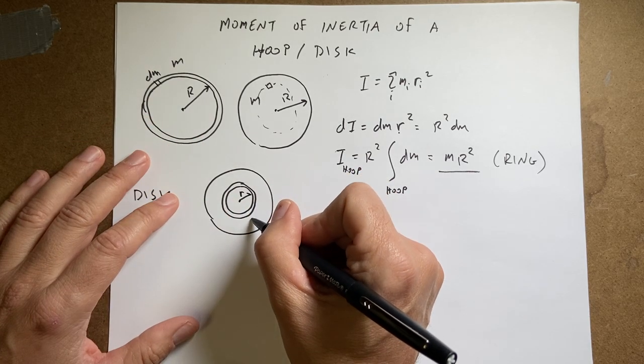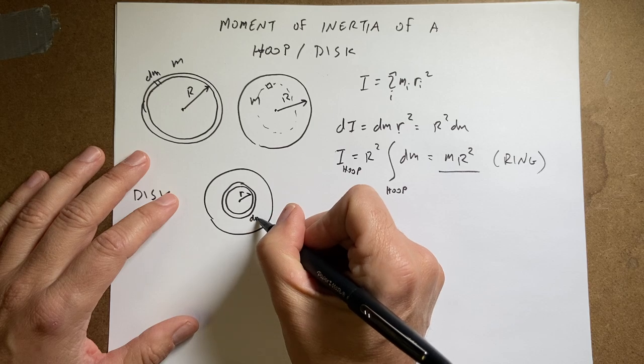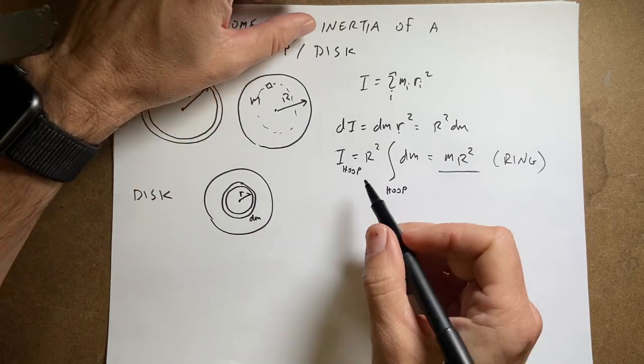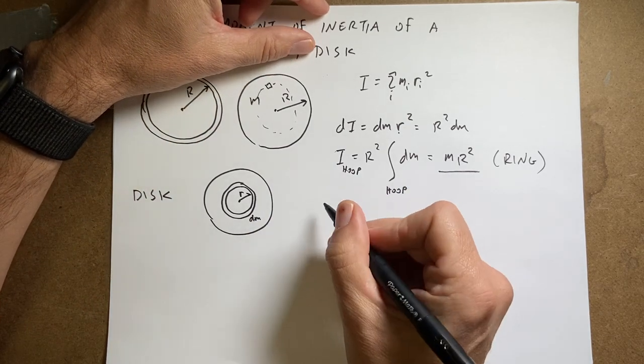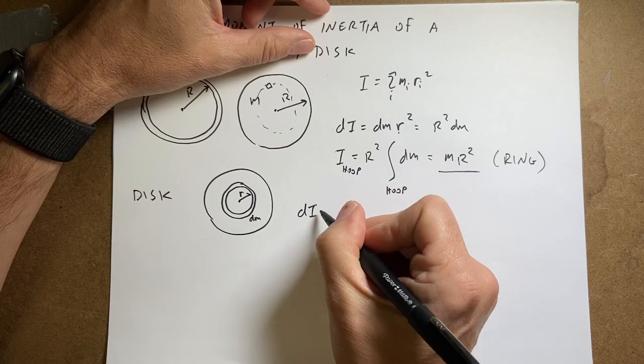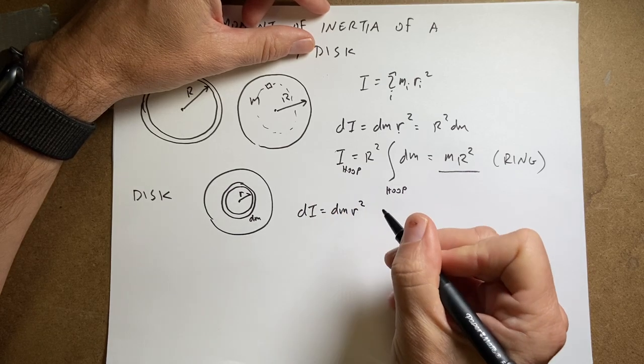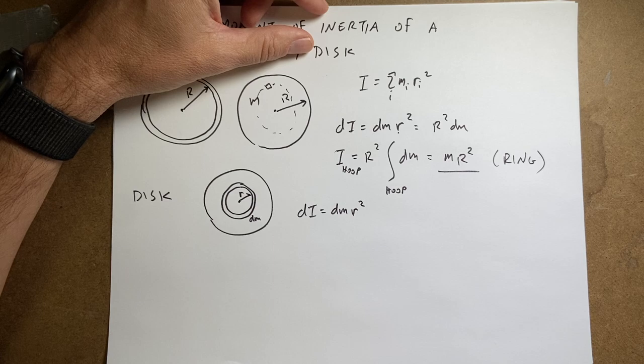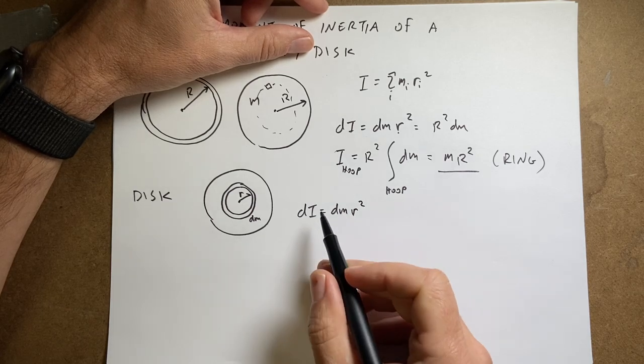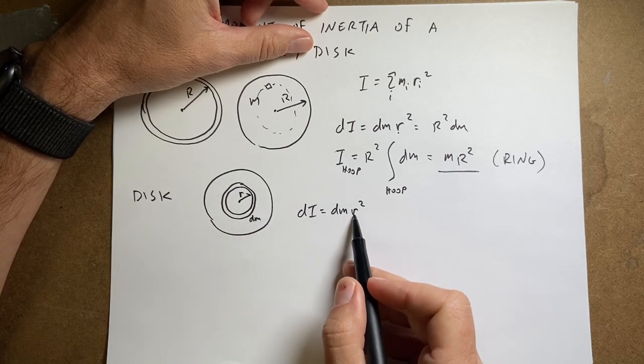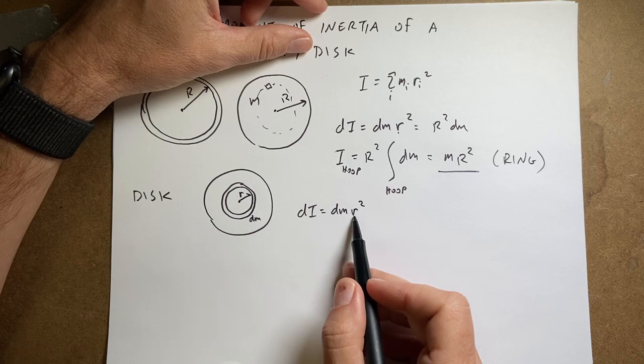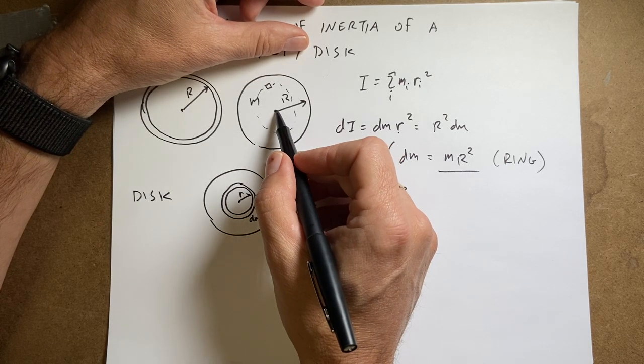This is going to have a radius r. I need to find the mass dm. And that's going to be the hard part. We can do that. So first, let's just write dI equals dm r squared. Yeah, and r is not constant. So now I need to get, if r is changing, I need to get the integration variable dm in terms of r. So let's go back up to this.